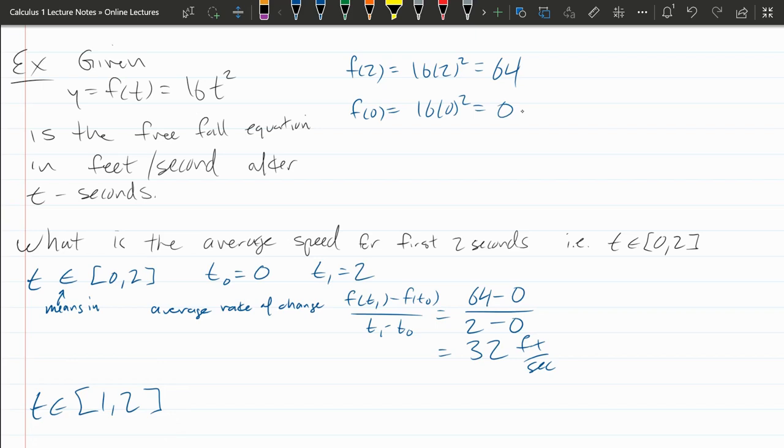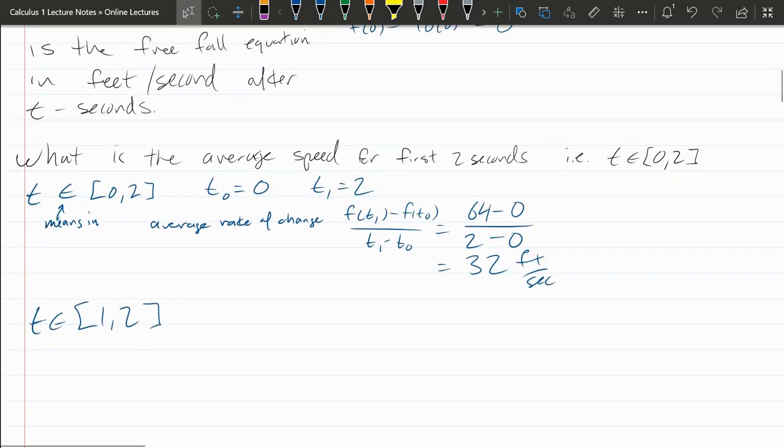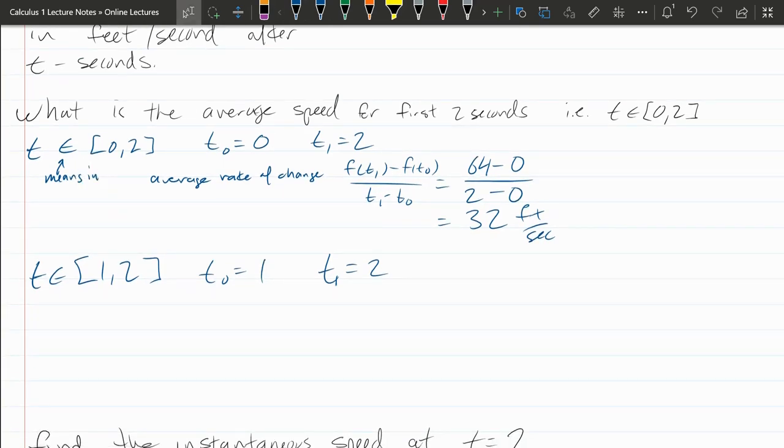So now I'm going to work through it and I'm going to relabel T0 and T1. T0 is 1. T1 is 2. So average rate of change.